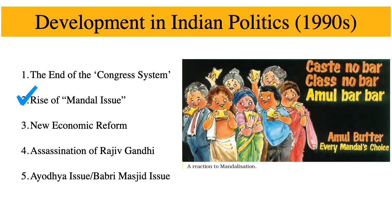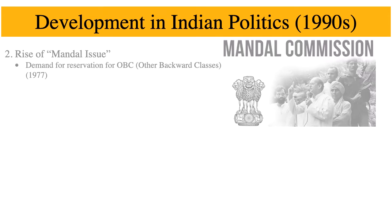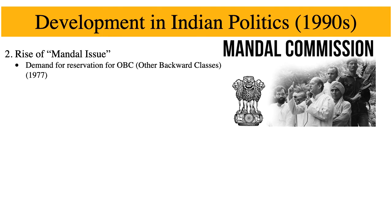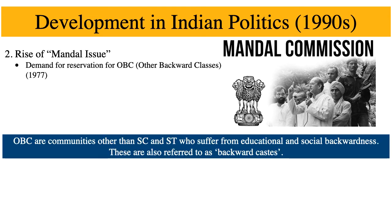The second development is the rise of the Mandal issue. This deals with the reservation of seats for Other Backward Classes, or OBC. OBCs are communities other than Scheduled Castes and Scheduled Tribes who suffer from educational and social backwardness. They are also referred to as backward castes. OBCs constituted about 52 percent of those who were socially and educationally backward.